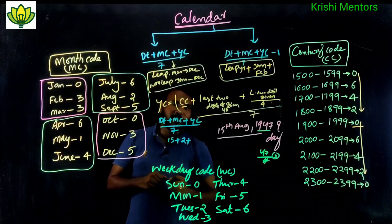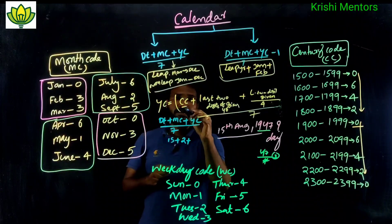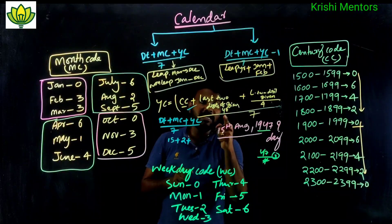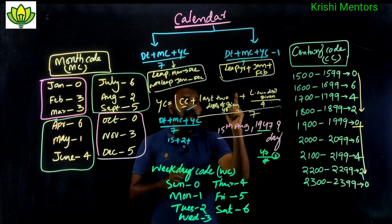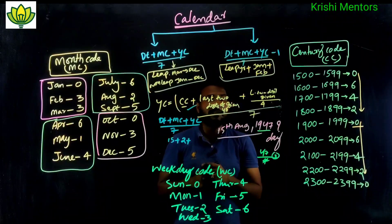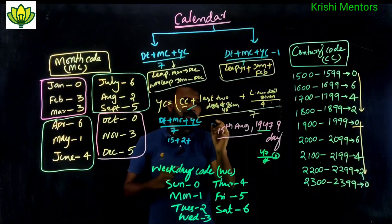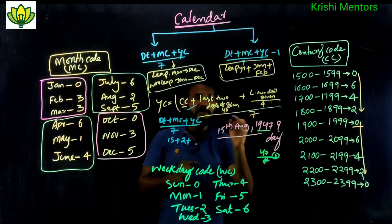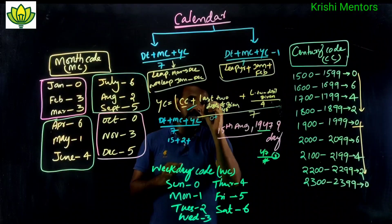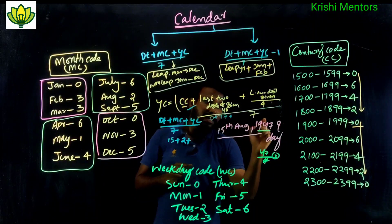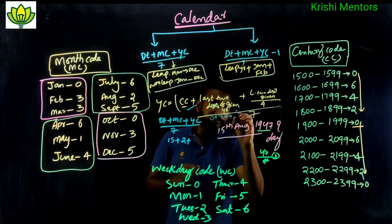Now we calculate the year code. The year code formula is: century code plus last two digits of the given year, plus last two digits of the given year divided by 4. For 1947, since 1900–1999 has century code 0: year code = 0 + 47 + 47 divided by 4.